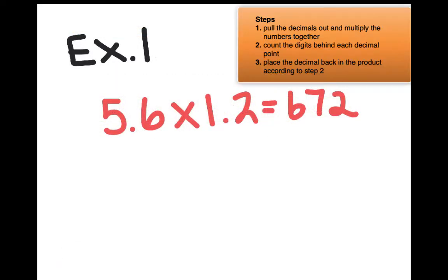When we're multiplying, we're moving the decimal point to the right, and when we're dividing, we're moving the decimal point to the left. So if you look at this problem in front of you, this is the very first example.